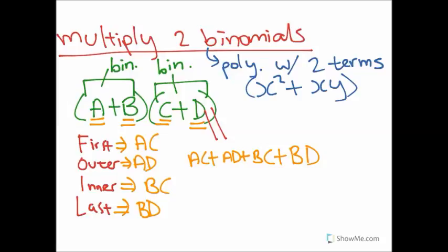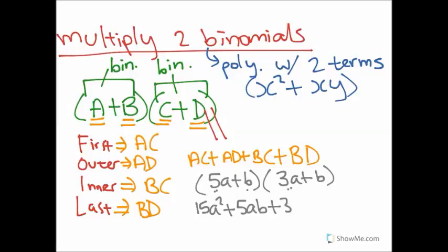So, we can have an example of this. Let's say we have 5a plus b times 3a plus b. So, first, we have 5a and 3a. So, multiplying those together gives us 15a squared. Outer, we have 5a and b, so that gives us 5ab. Inner, we have b and 3a, so that gives us 3ab. And then, last, we have b and b, so that's just b squared.